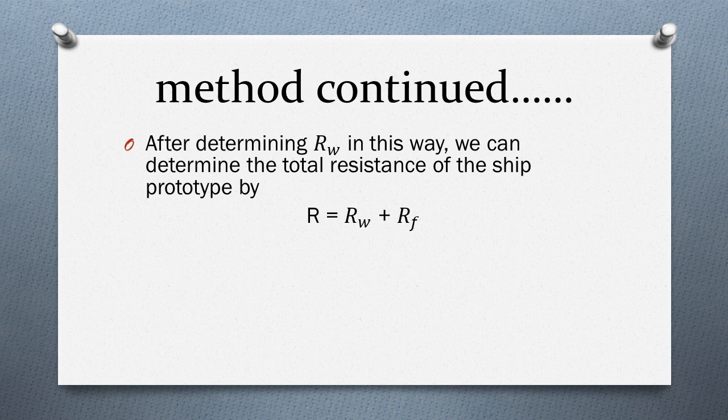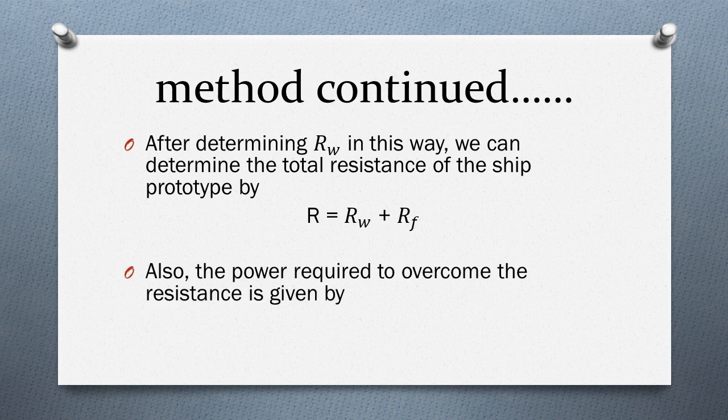The total resistance is then calculated as R = Rw + Rf. We can also determine the power required to overcome the resistance, given by P = R × Vp / 1000, to get the result in kilowatts.